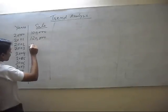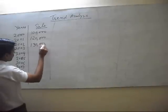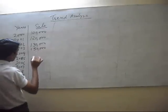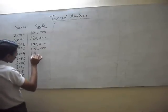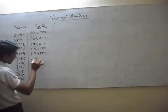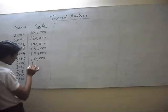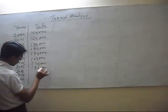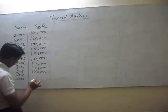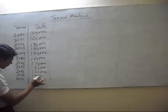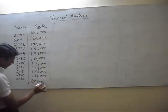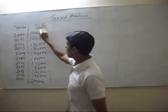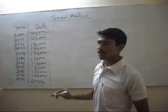Next year our sale is one lakh thirty thousand, then one lakh fifty thousand, one lakh forty thousand, one lakh sixty thousand, one lakh seventy thousand, one lakh eighty thousand, one lakh thirty thousand, one lakh forty thousand, and two lakh. These are the sales figures. We are taking the year 2000 as the base year.